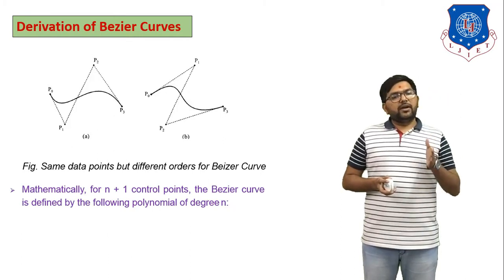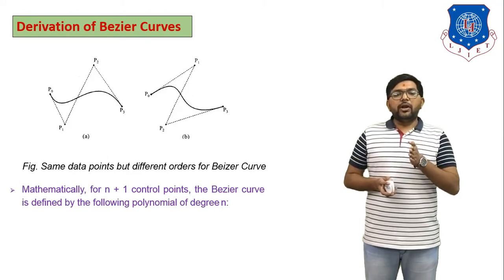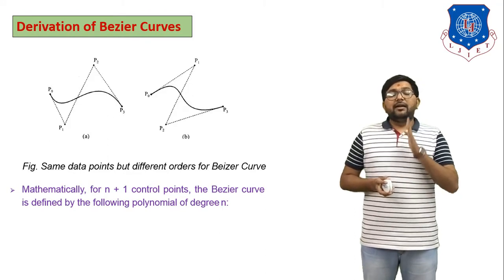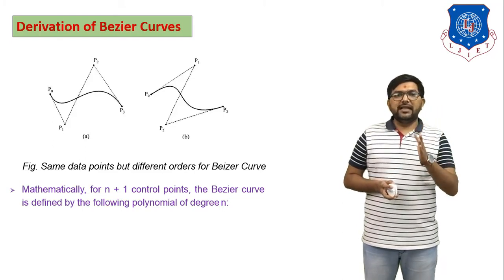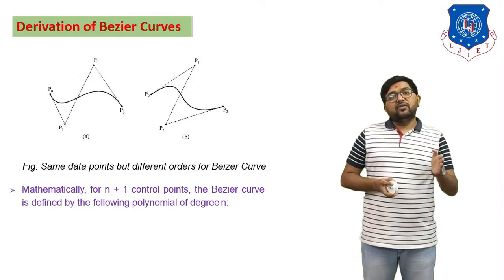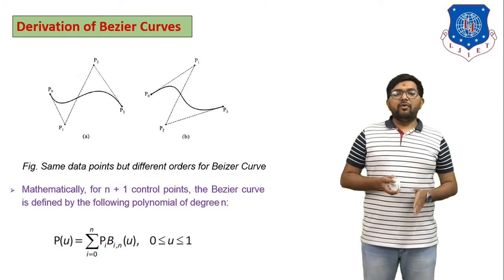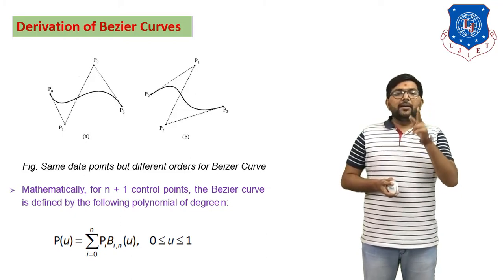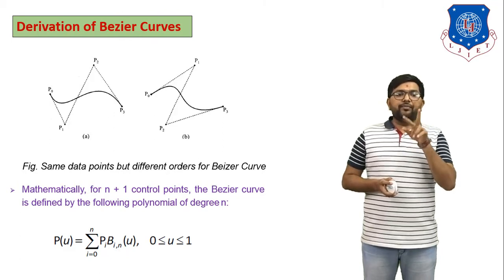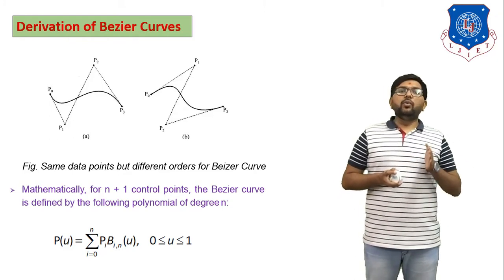Mathematically, for n+1 control points, the Bezier Curve is defined by a polynomial. Just as the equation of a line is fixed as y = mx + c, the equation of a Bezier Curve is also fixed: P(u) = Σ (i=0 to n) Pᵢ · B(i,n,u), where 0 ≤ u ≤ 1. You have to remember this equation.